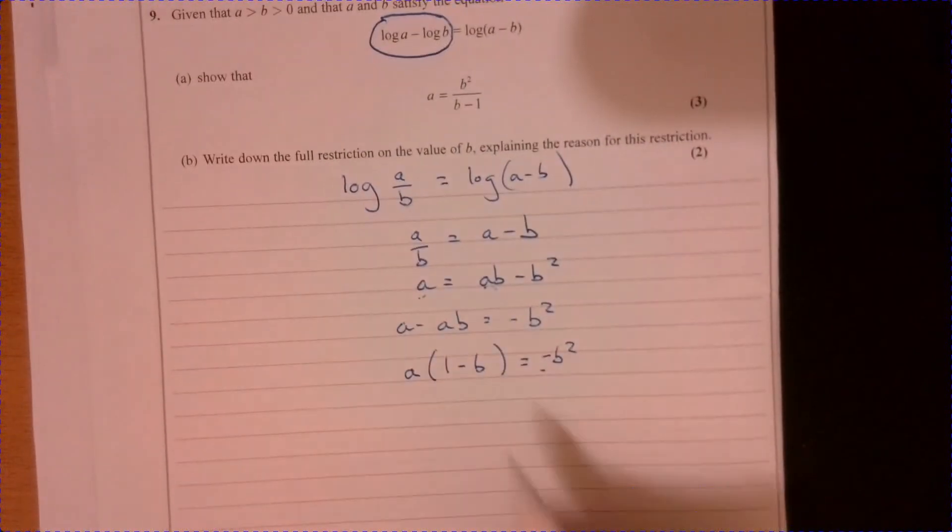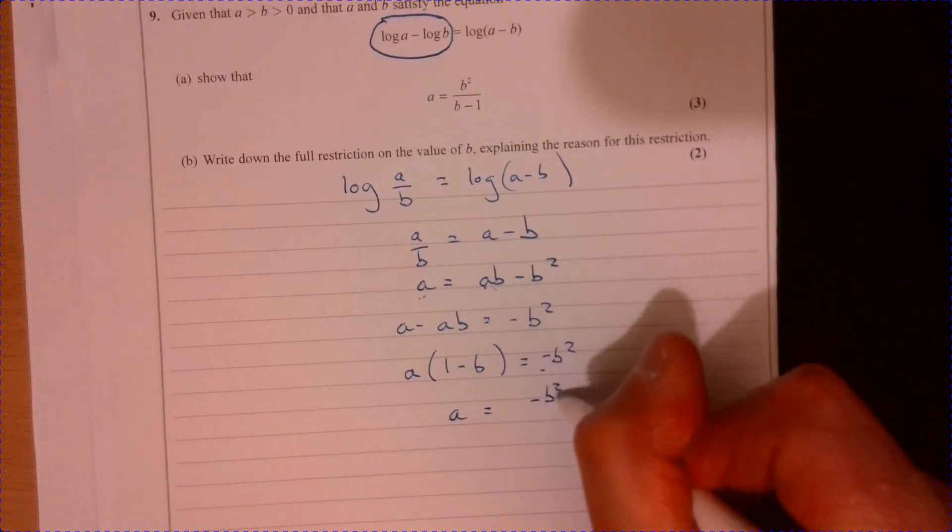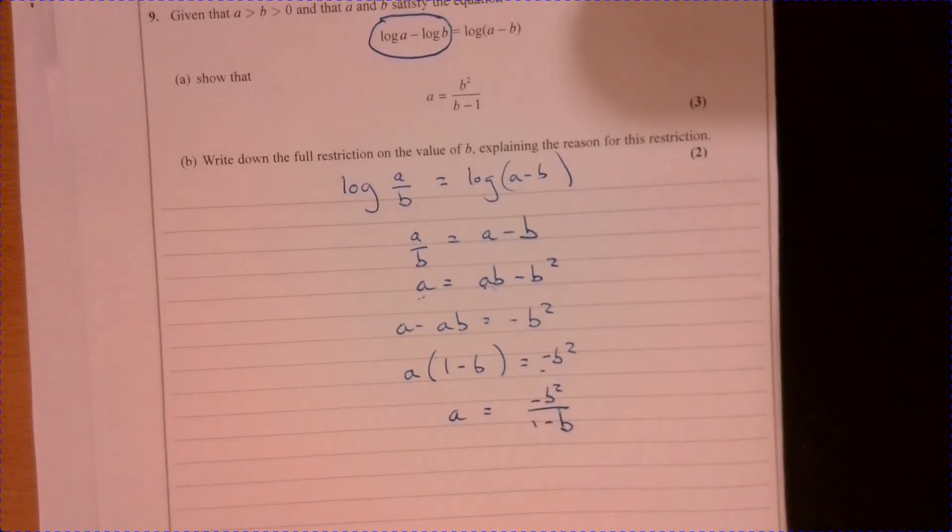Just getting ahead of myself there a little bit. Divide by 1 minus B. Okay. And that's great.